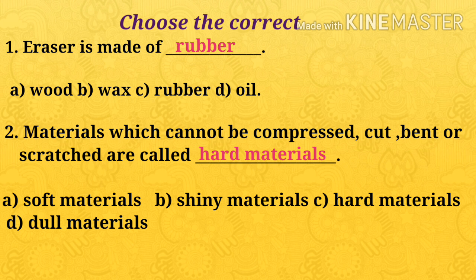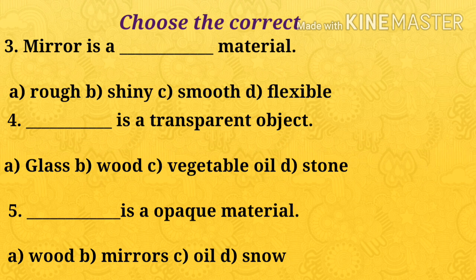The answer is hard materials. Third one: mirror is a smooth material. Fourth one: dash is a transparent object — options are glass, wood, vegetable oil, stone. Objects which allow all light to pass through them are called transparent objects. Which is the transparent object? Glass. Glass is a transparent object.